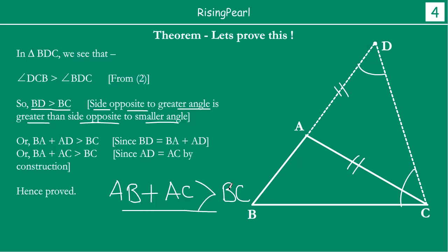So we have seen, friends, this is what we wanted to prove — that in any triangle, if you take two sides, their sum is greater than the third side. We have taken sides AB and AC and proved that AB plus AC is greater than BC. Hopefully you are following these presentations where we take one theorem at a time, explain what it is, and show how to prove it. See you in the next episode!